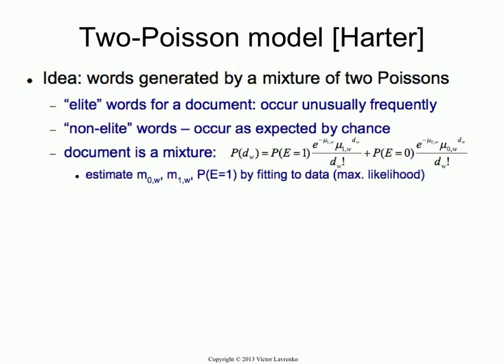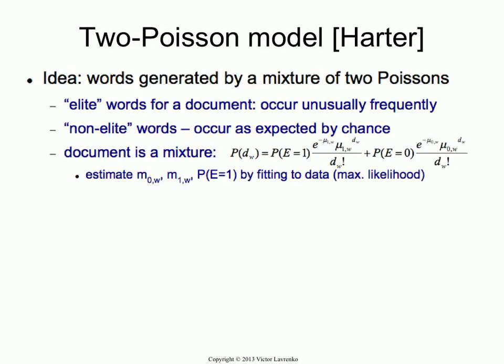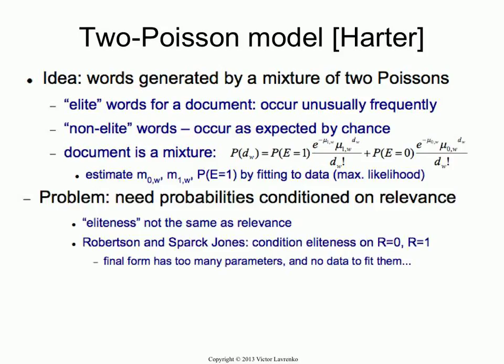You do have an extra parameter and you have to estimate these — you have to estimate two means because you have two Poissons. Harder came up with this not for retrieval, but just for describing word occurrences in documents. Then Robertson and Spark Jones, the guys working on the probabilistic model, decided to adopt this as a way of bringing frequencies into the probabilistic model. But what they bumped into is eliteness — it's a corpus-wide measure, the same measure for the entire corpus, so it's not really the same thing as relevance. They decided they needed to condition the eliteness variable on whether you're in the relevant class or non-relevant class.